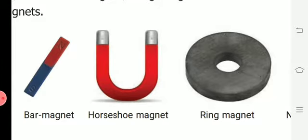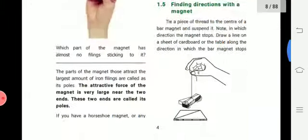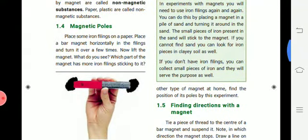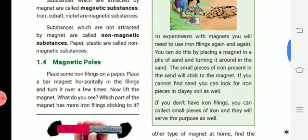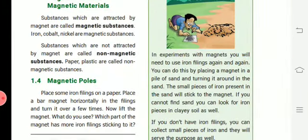So if you are taking a horseshoe magnet or any other type of magnet, what will be the answer? That is the question. So here they have given some activity. In experiments with magnets, you will need to use iron filings again and again.